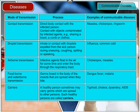Airborne Transmission: Infective agents float in the air for some time and enter the body through the respiratory tract. Diseases include chickenpox and measles. Foodborne and Waterborne Transmission: Germs breed in the body of insects and are spread when they bite. Diseases include dengue fever and malaria. Carriers: A healthy person sometimes may carry germs which are spread to other persons; such healthy persons are called carriers.